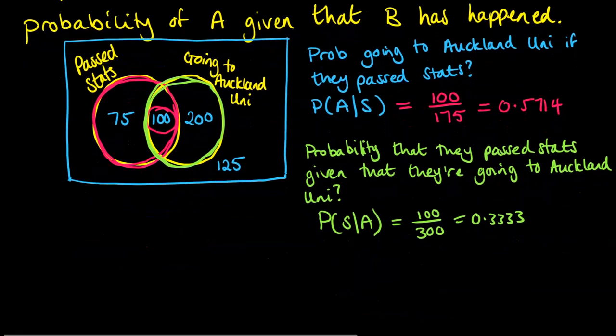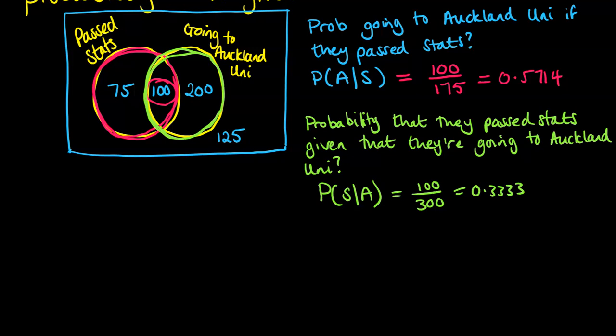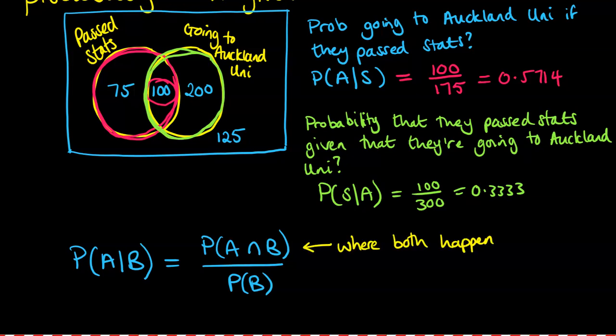There is actually a formula that applies to this. If we've got events A and B, the probability of A given B equals the probability of A intersection B over the probability of B. So the intersection meaning the place where A and B both happen, divided by our restricted domain of only looking at that condition of B. If you take a look at the examples we did above intuitively, that's exactly what we did.